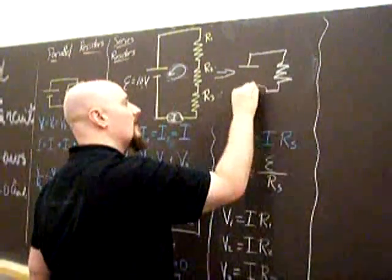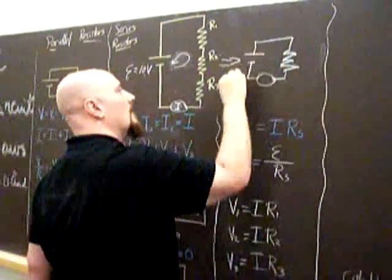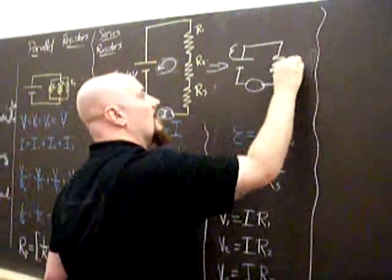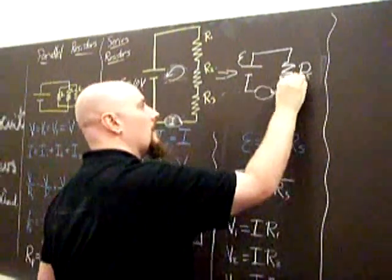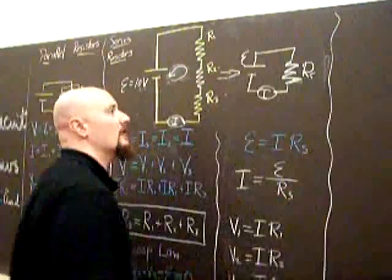One resistor, current meter here, back to the EMF. That's the EMF, and now this is RS. That's the current meter. This is an equivalent resistance.